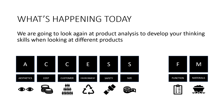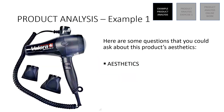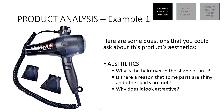We're going to have a look at product analysis to develop your thinking skills when looking at different products. On the left is a picture of a hairdryer. Here are some possible questions you could ask when thinking about this product's aesthetics — how it looks. You could ask: why is the hairdryer in the shape of an L? Is there a reason that some parts are shiny and other parts are not? On the picture you can see the left-hand side with the name and logo is shiny, while the right-hand side has a very matte finish. Why does it look attractive? I want you to answer in a proper sentence — if you think it looks attractive, explain why; if you think it doesn't, explain why, rather than just writing yes or no.